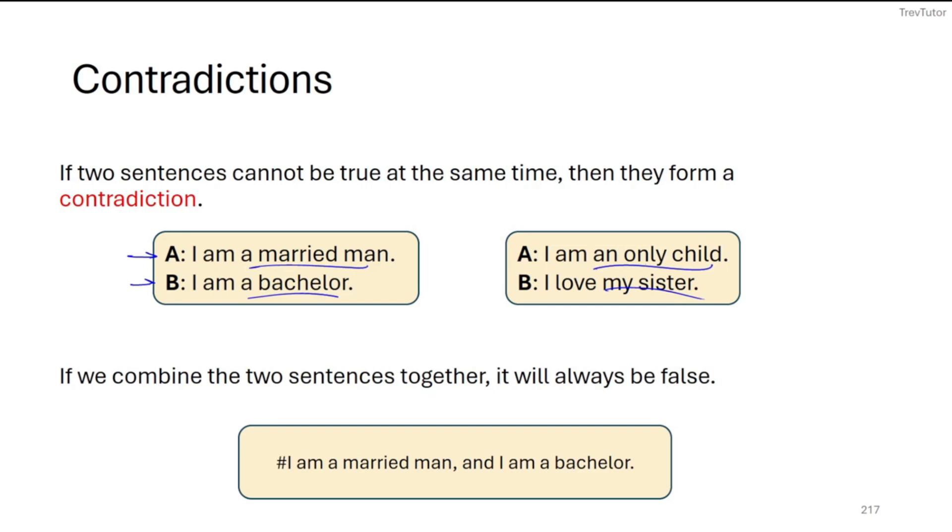And if we combine them together, then the sentence will always be false. So I'm a married man and I am a bachelor. That's not semantically okay because you can't be both.